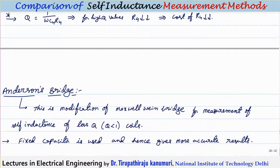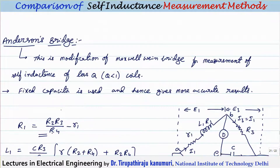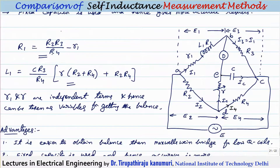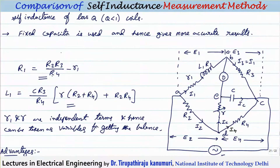That is why the Hays bridge is used for Q greater than 10. The Anderson bridge was specifically designed for Q less than 1 — a range where neither the Maxwell-Wien bridge nor the Hays bridge works. Its second advantage is that the capacitor is fixed; only resistors are varied to obtain balance.